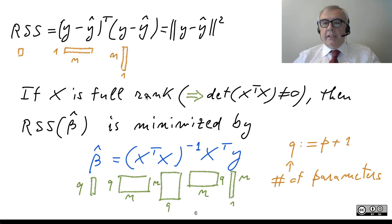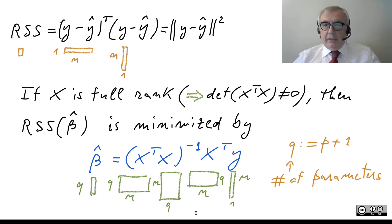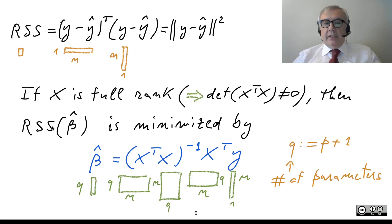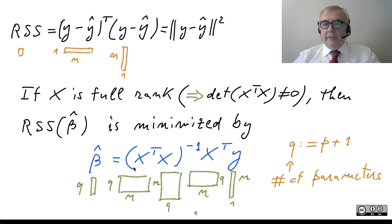Full rank means that none of its columns can be obtained as a linear combination of the other columns — the columns of X are linearly independent. If this is satisfied, you can prove that the determinant of X-transpose X is nonzero, and in this case the minimization problem admits a unique solution: beta-hat equals (X-transpose X) inverse times X-transpose Y.